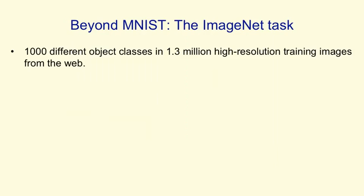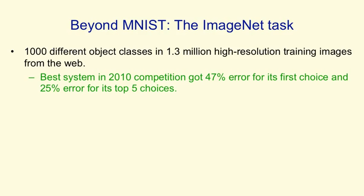I don't want you to think that's the only thing we can do — it's a relatively simple thing for a machine learning system to do now. To motivate the rest of the course, I want to show you some examples of much more difficult things. We now have neural nets with approaching 100 million parameters that can recognize 1,000 different object classes in 1.3 million high-resolution training images from the web. There was a competition in 2010 and the best system got 47% error rate for its first choice and 25% error rate if it was in its top five choices, which isn't bad for 1,000 different objects.